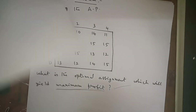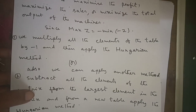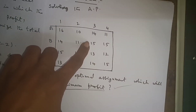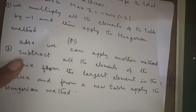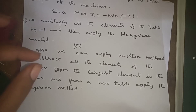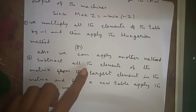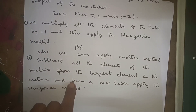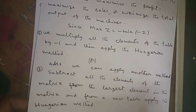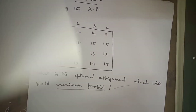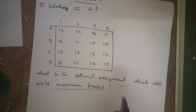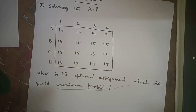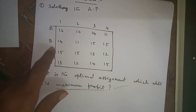In the maximization assignment problem, there is one small difference. I told you two methods: either multiply the whole table with minus one and then apply the Hungarian method, or subtract all elements from the largest element in the matrix and then apply the Hungarian method. I am now applying the second method. Here, maximum profit is given, that's why this is a maximization assignment problem.